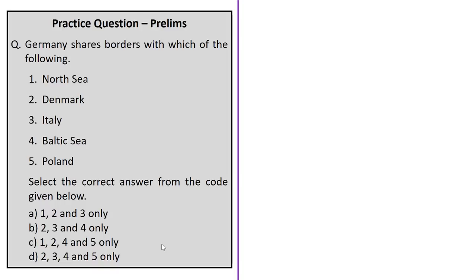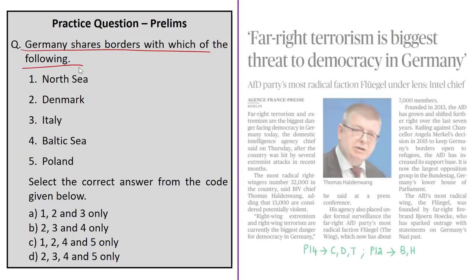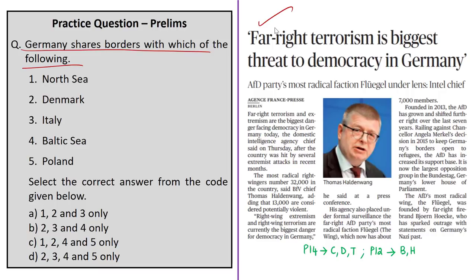A map-based question asks which countries and water bodies Germany shares a border with, framed from a news article on growing right-wing terrorism in Germany. Germany's intelligence agency chief has said far-right terrorism and extremism are the biggest dangers faced by democracy in Germany. A far-right party called AfD (Alternative for Deutschland), founded in 2013, is based on German nationalism, anti-Islam, anti-Semitic, and racist ideology, and is now the largest opposition group in the Bundestag, Germany's lower house of parliament.